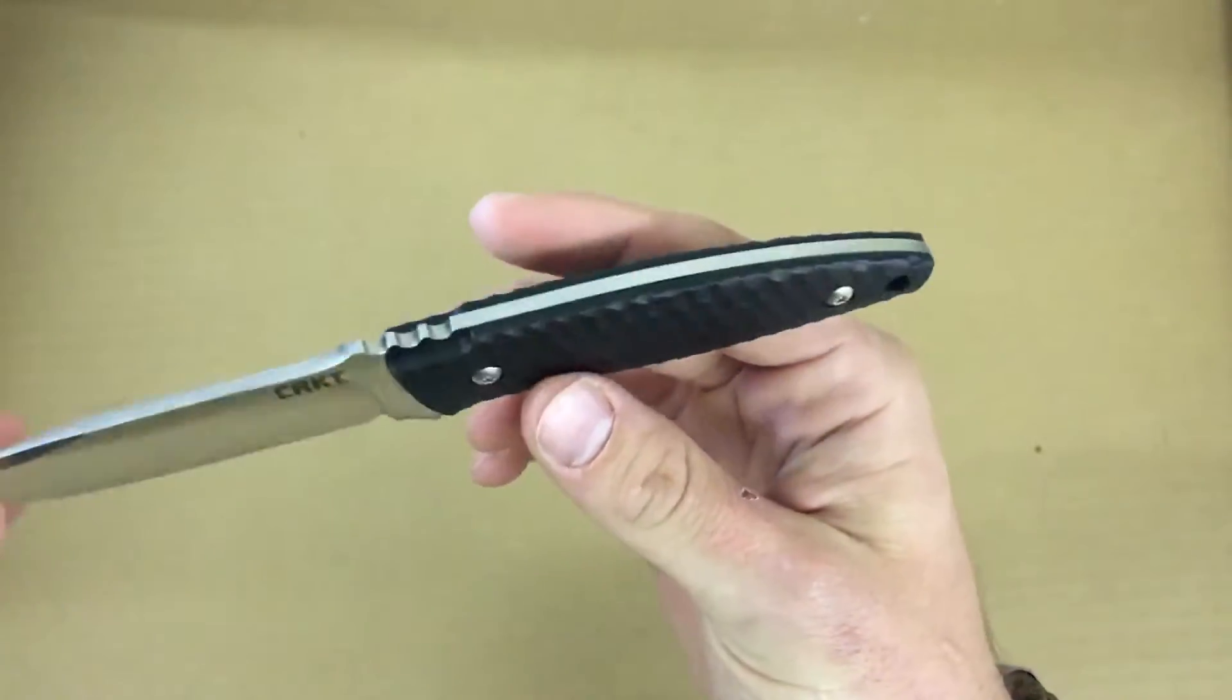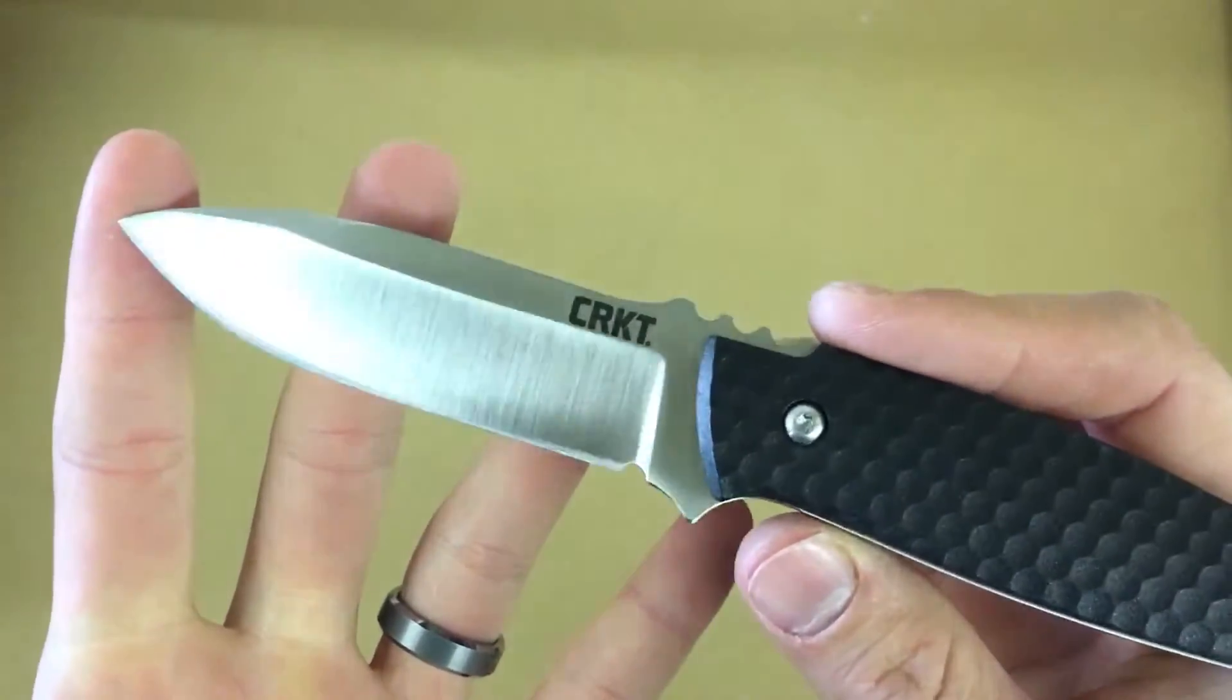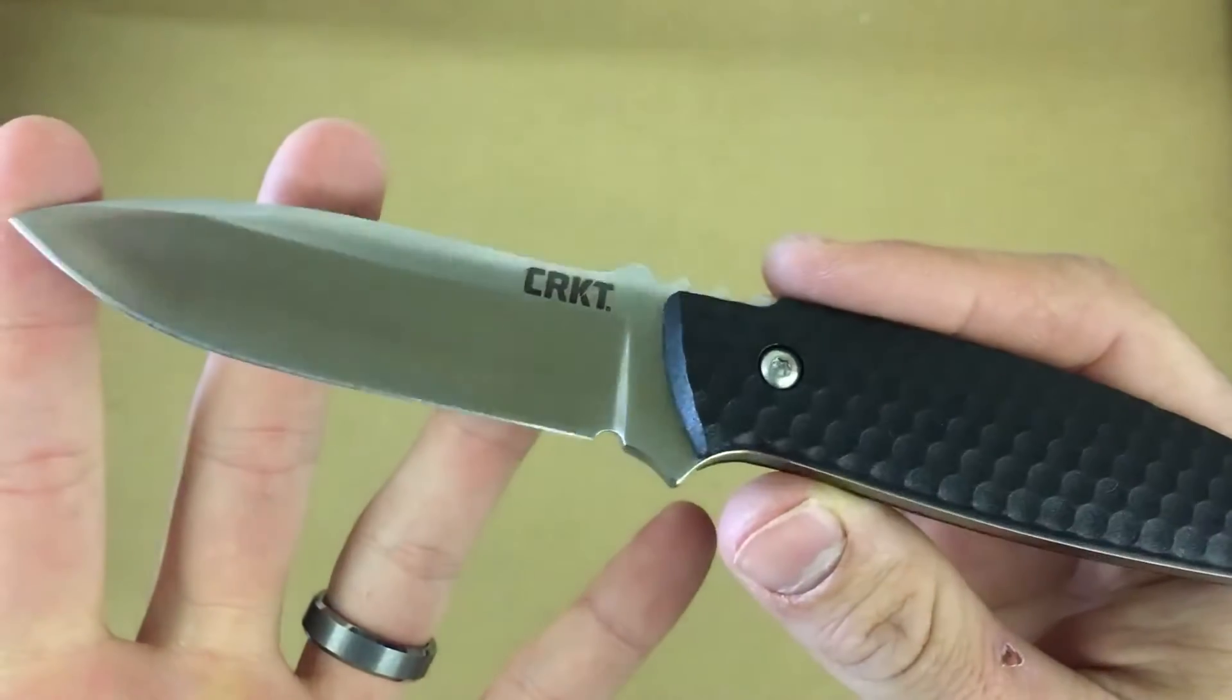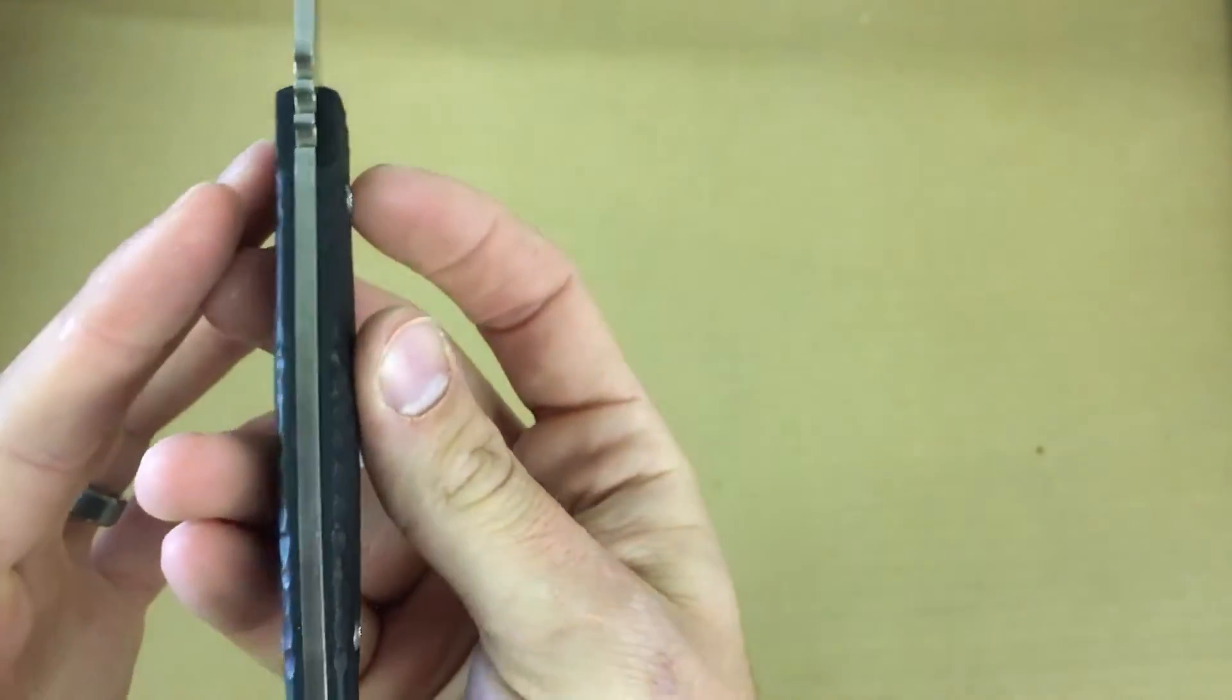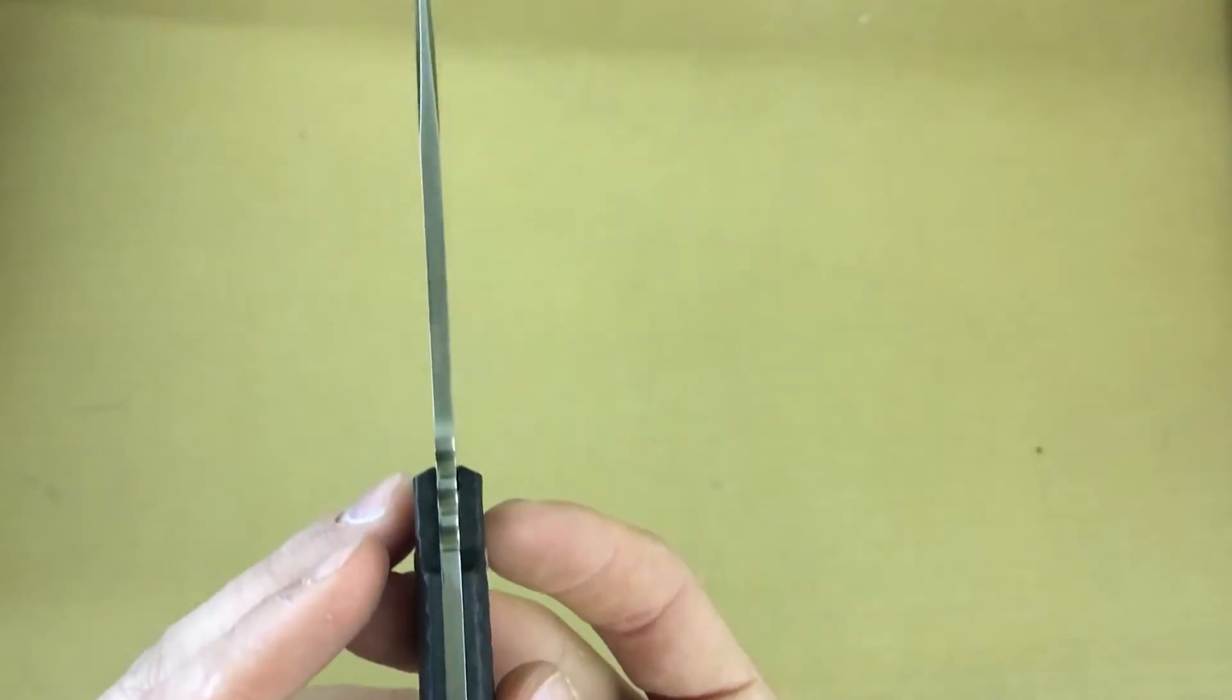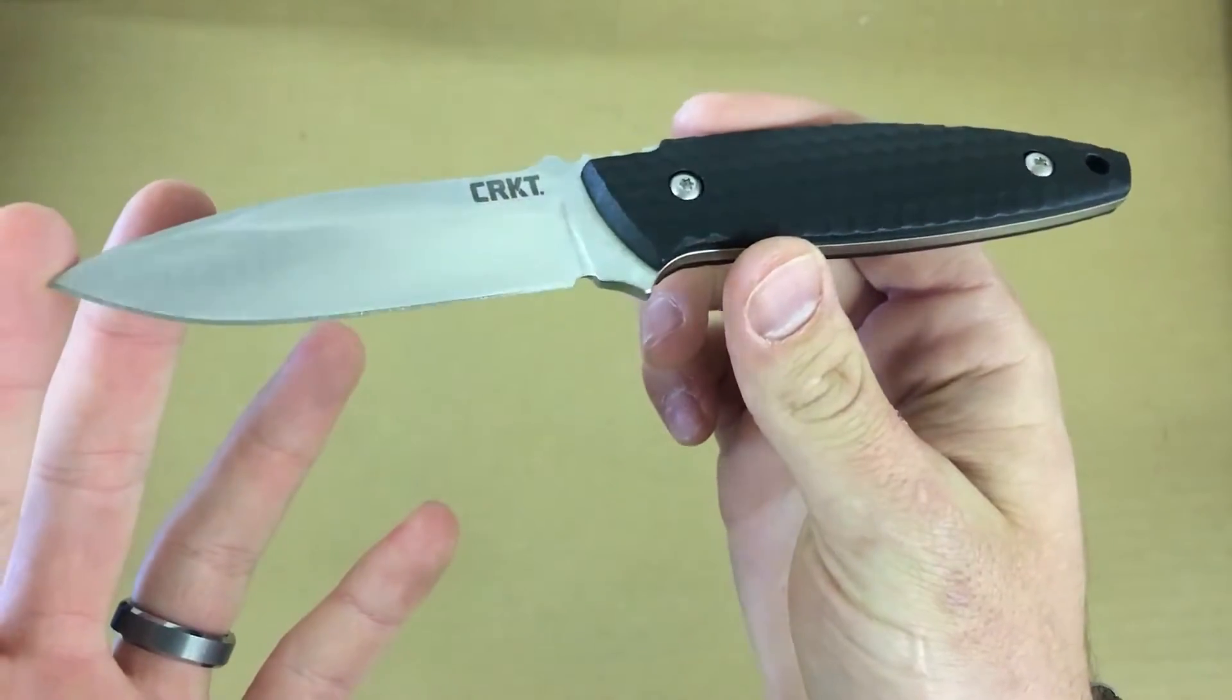I'm not super fond of the tiny little one inch, two inch blade neck knives. I thought this was a good happy medium. Let's go to the blade here. This is a spear point made out of 8Cr13MoV steel that we're probably all very familiar with, and it is full tang all the way through the handle here.